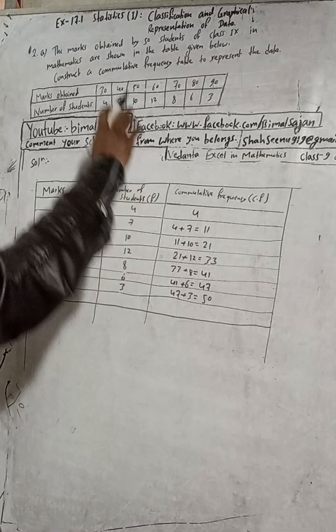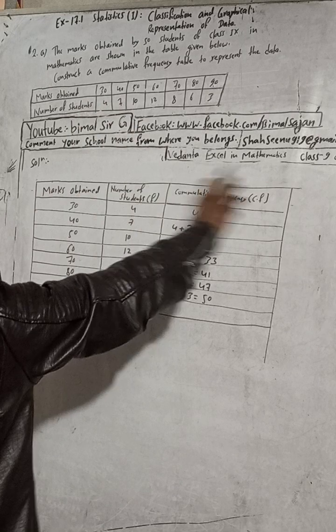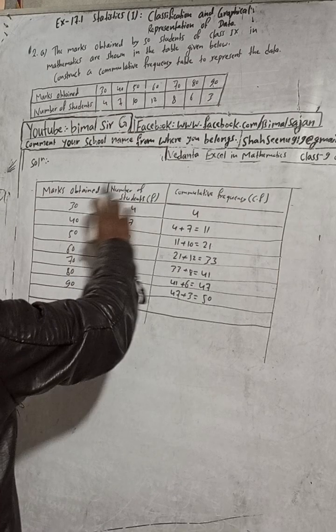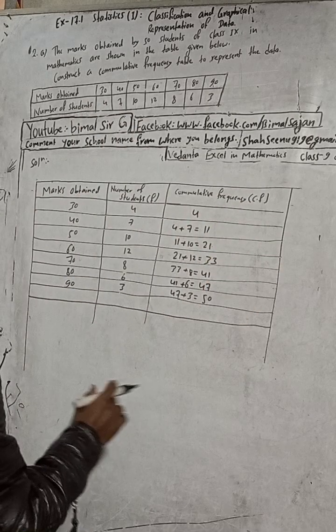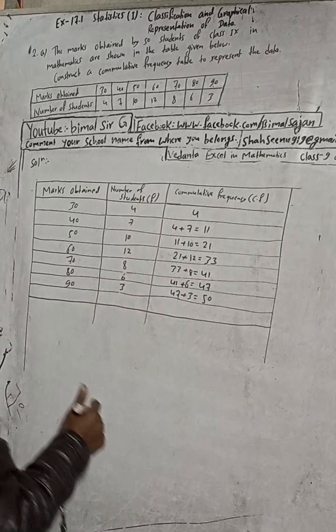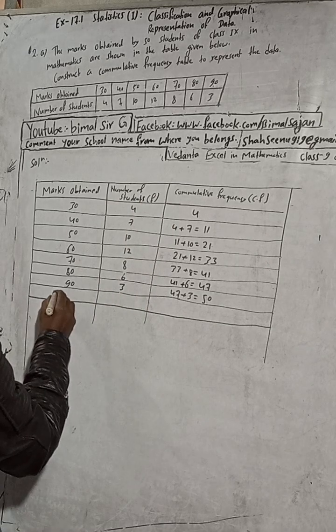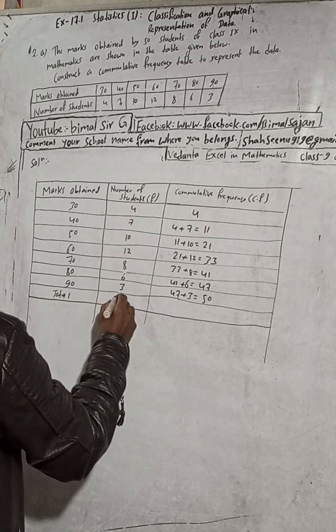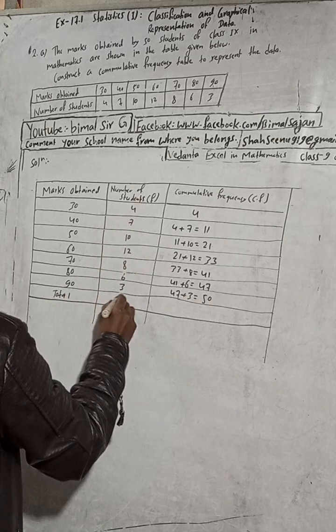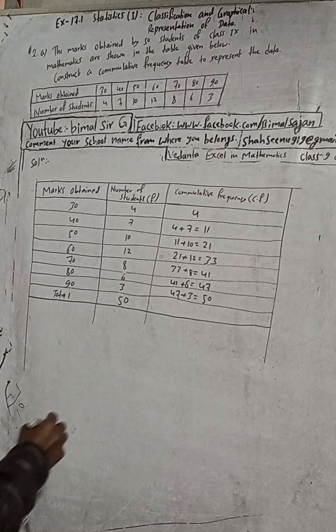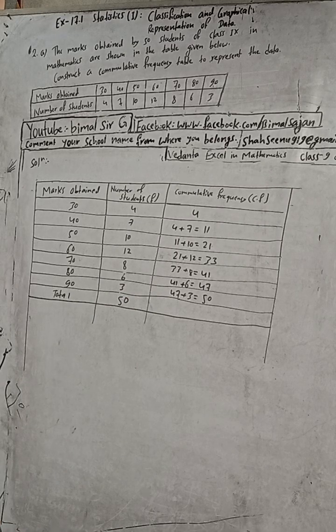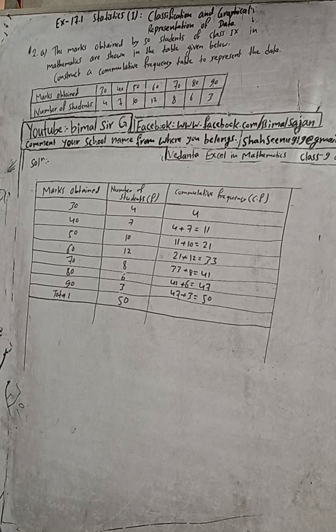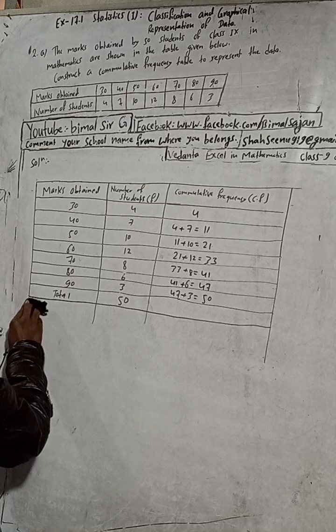This is the cumulative frequency. Finally you can write here total. If you add this you will get 50. So we have 50. To make it look good, you can format this part.